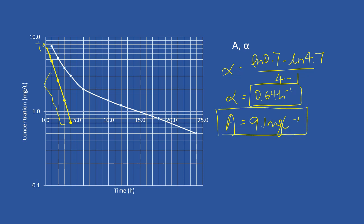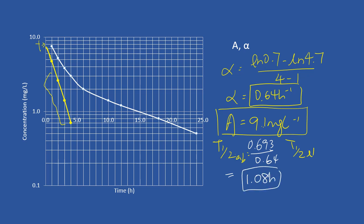The next part of the question requires you to calculate the half-life for absorption and half-life for elimination. You need to use ln(2) divided by ka or ke. For absorption half-life: 0.693 divided by 0.64 gives 1.08 hours. For elimination half-life: 0.693 divided by 0.077 gives 9 hours.